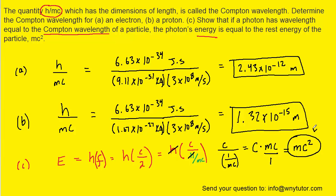And that confirms that when the wavelength is equal to the Compton wavelength, the energy is equal to the rest energy. Let's not forget that mc squared is indeed equal to the rest energy. And so part C of the question is solved.